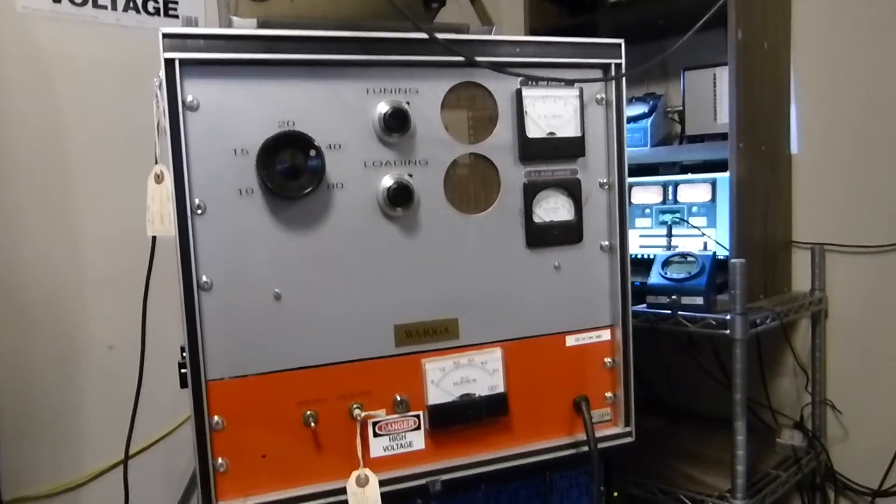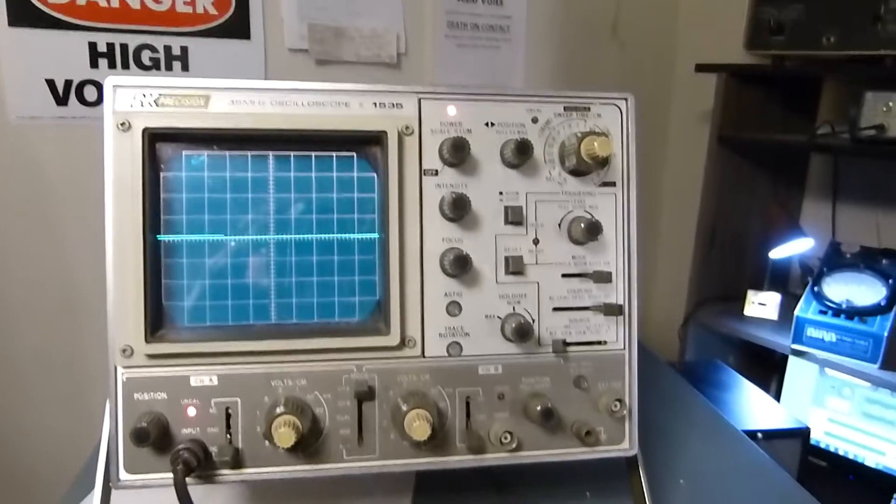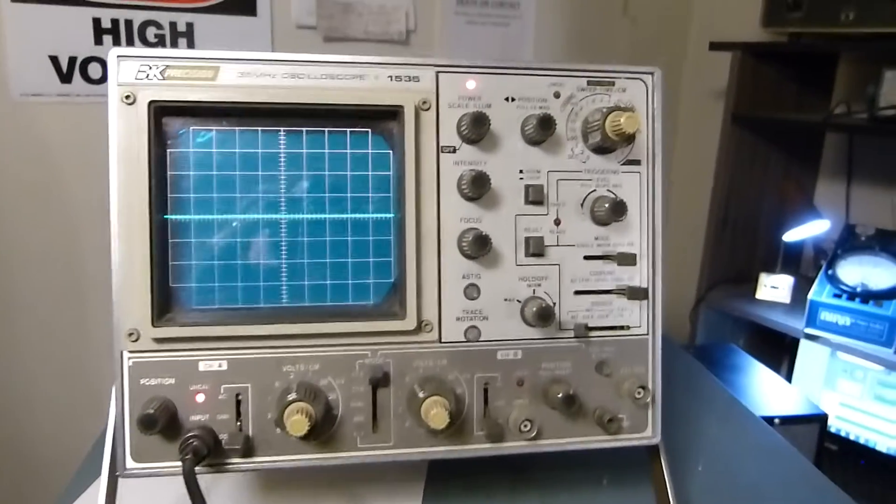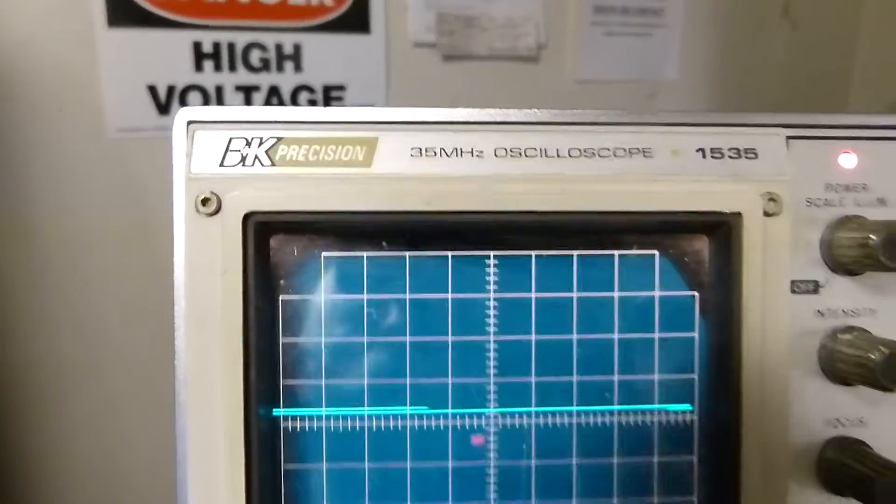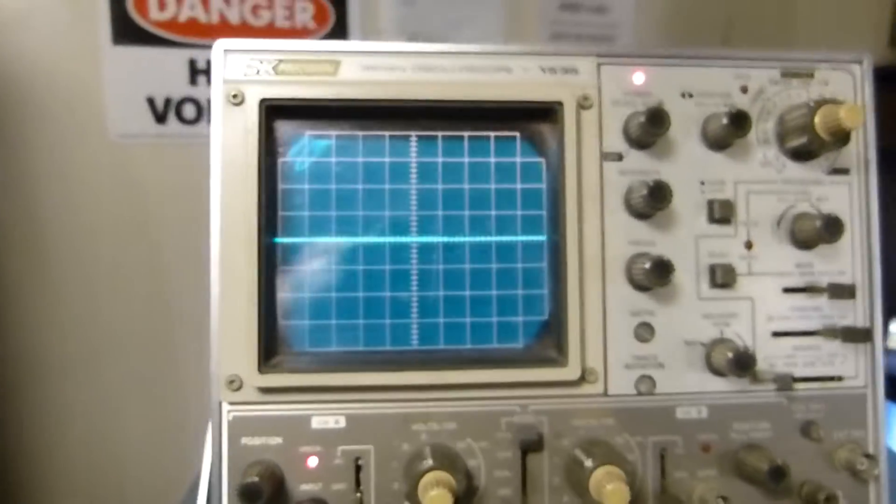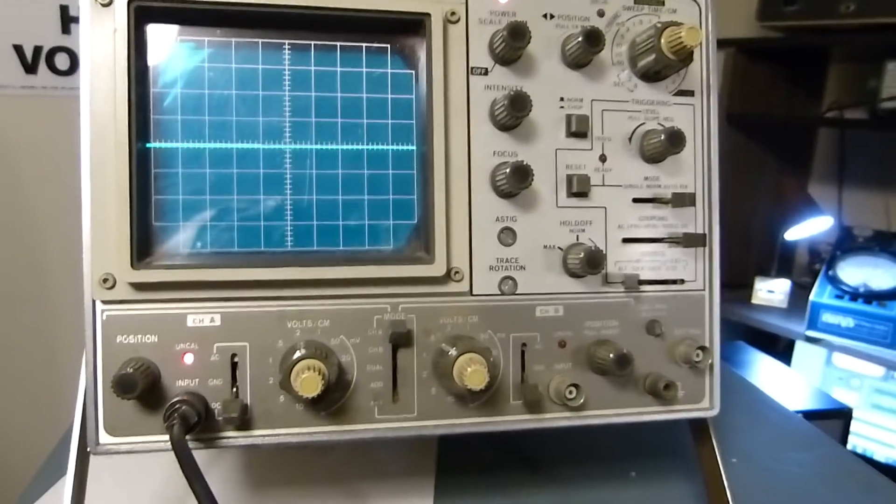And I can modulate that 100% or I can just talk softly and keep the PEP output at 1500 watts or below and actually stay legal. And then at the top I have this - this is actually quite a nice little scope. I'm a Tektronix scope lover, but this BK Precision right here, it's got a nice big screen and it does an excellent job.